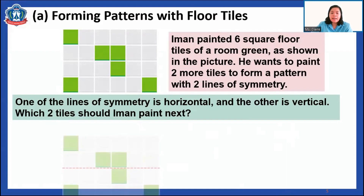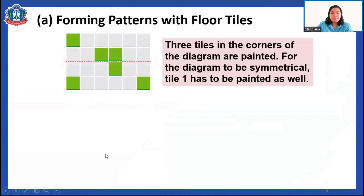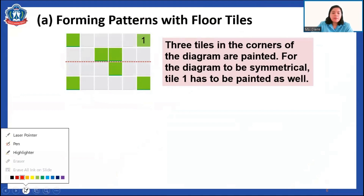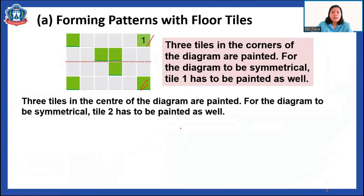Take a look — this is the horizontal line, shown in red. To make the pattern symmetrical, we look at the upper and lower sides. Three tiles in the corners of the diagram are painted. For the diagram to be symmetrical, tile one has to be painted as well. We have a green painted tile here, so the top should also have one green tile to make it symmetrical.